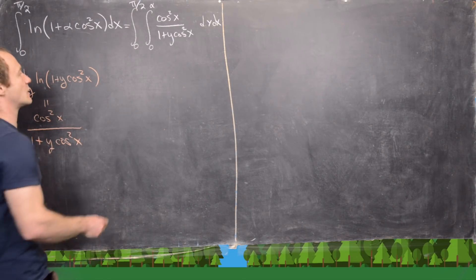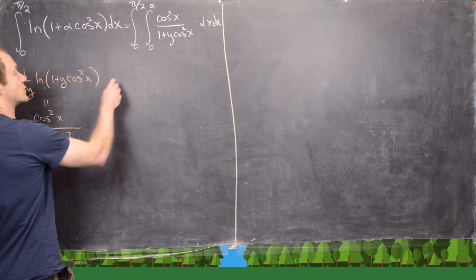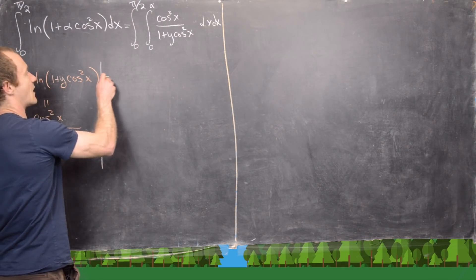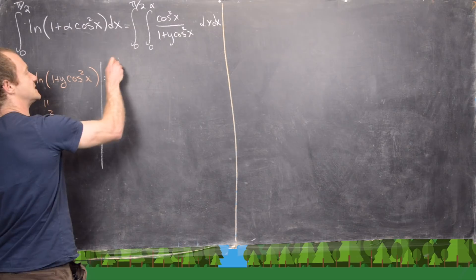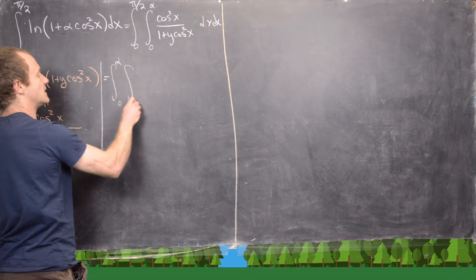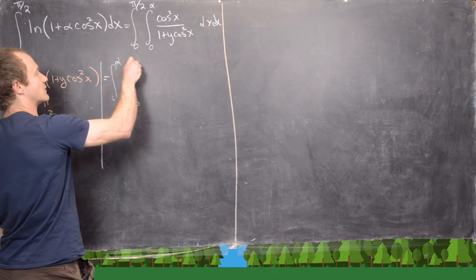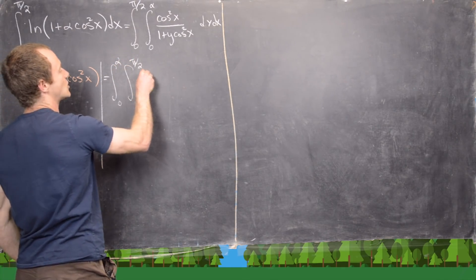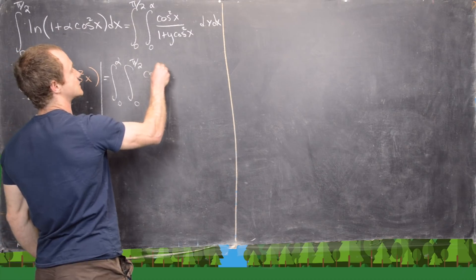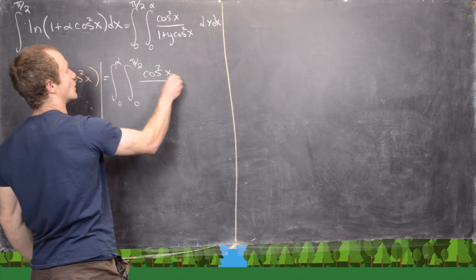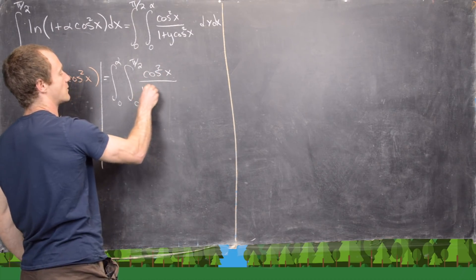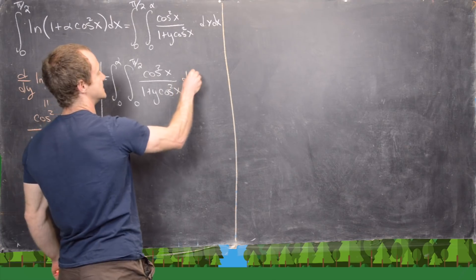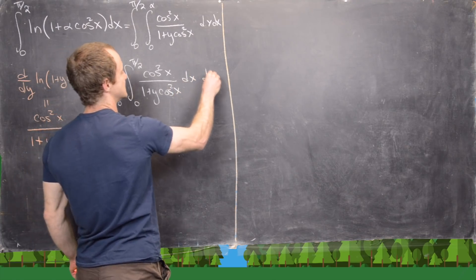Now I want to change the order of integration. That allows me to rewrite this as the integral from 0 to α, the integral from 0 to π/2, of cosine squared x over 1 plus y·cosine squared x, dx dy.